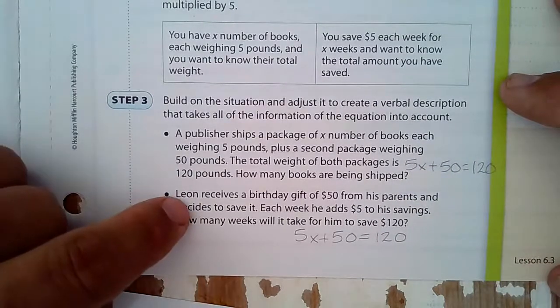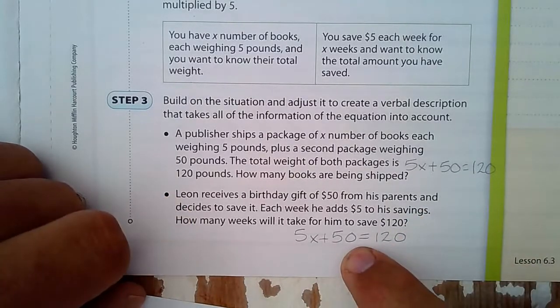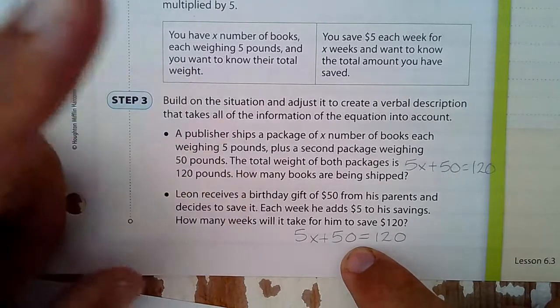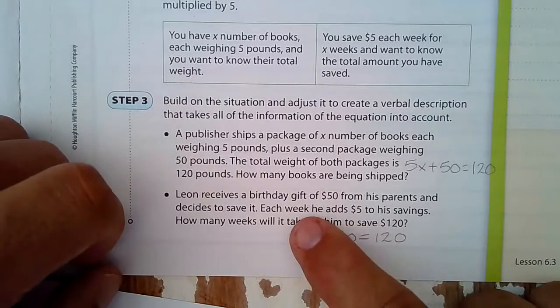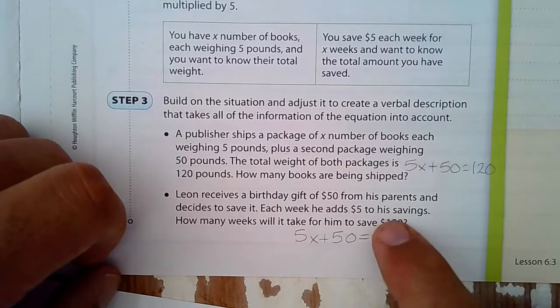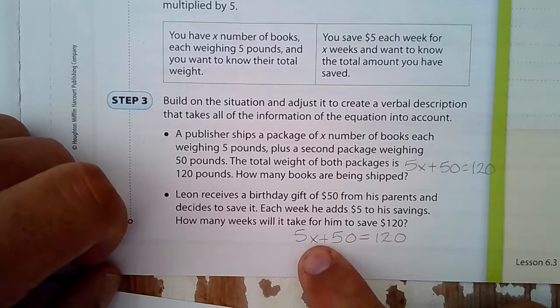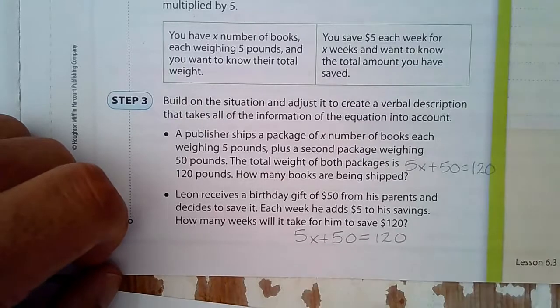The other one, Leon receives a birthday gift of $50 from his parents and decides to save it. Each week, so there's the 5 times x, each week he adds $5 to the savings. How many weeks will it take him to save $120? So x is the number of weeks.